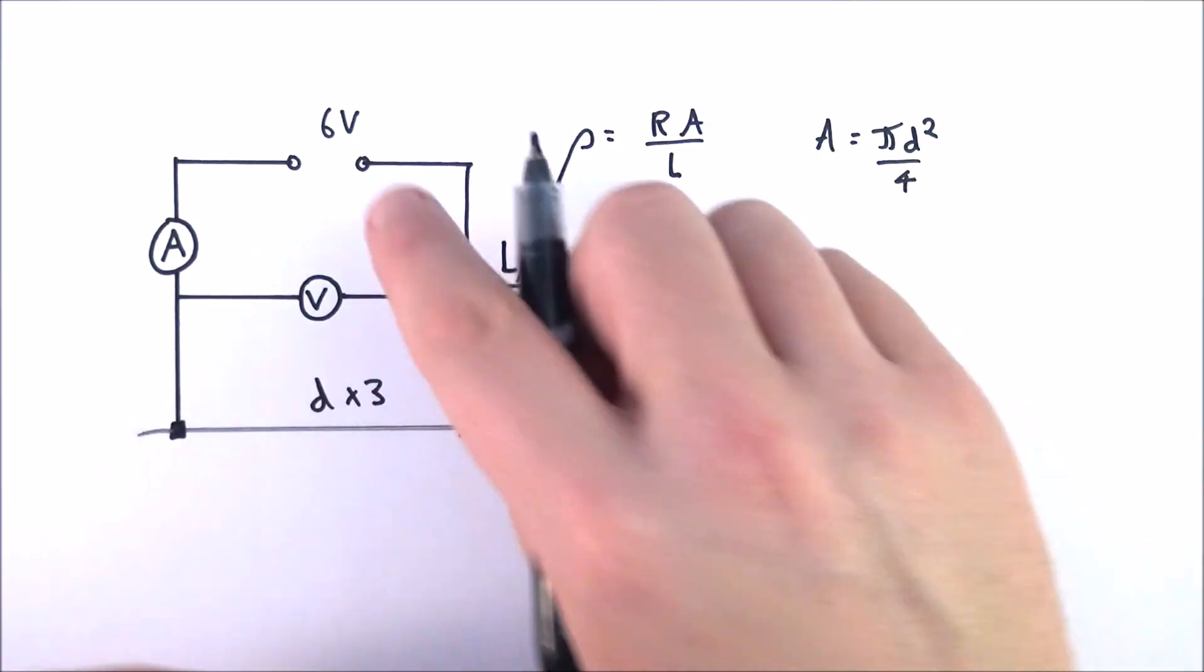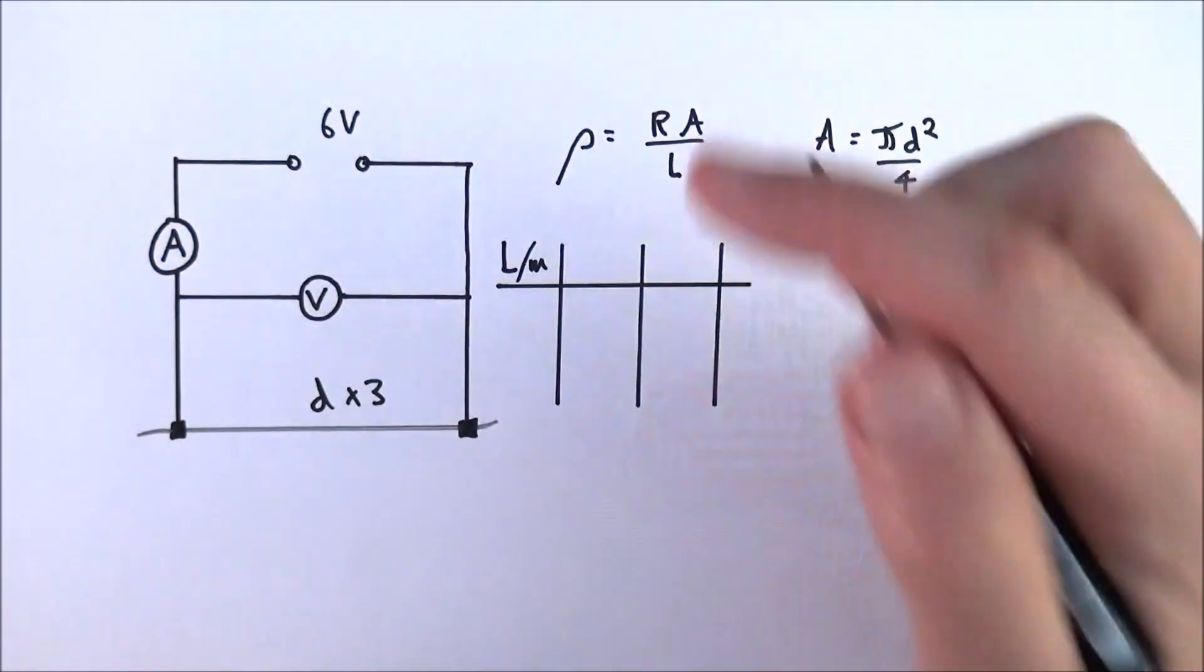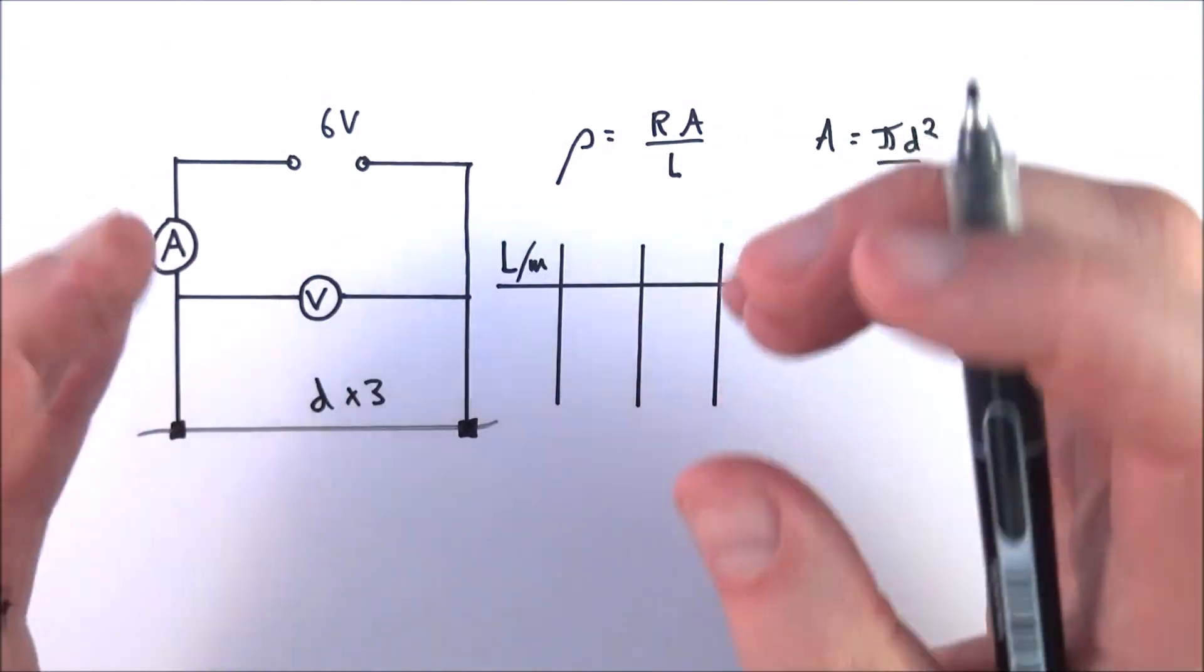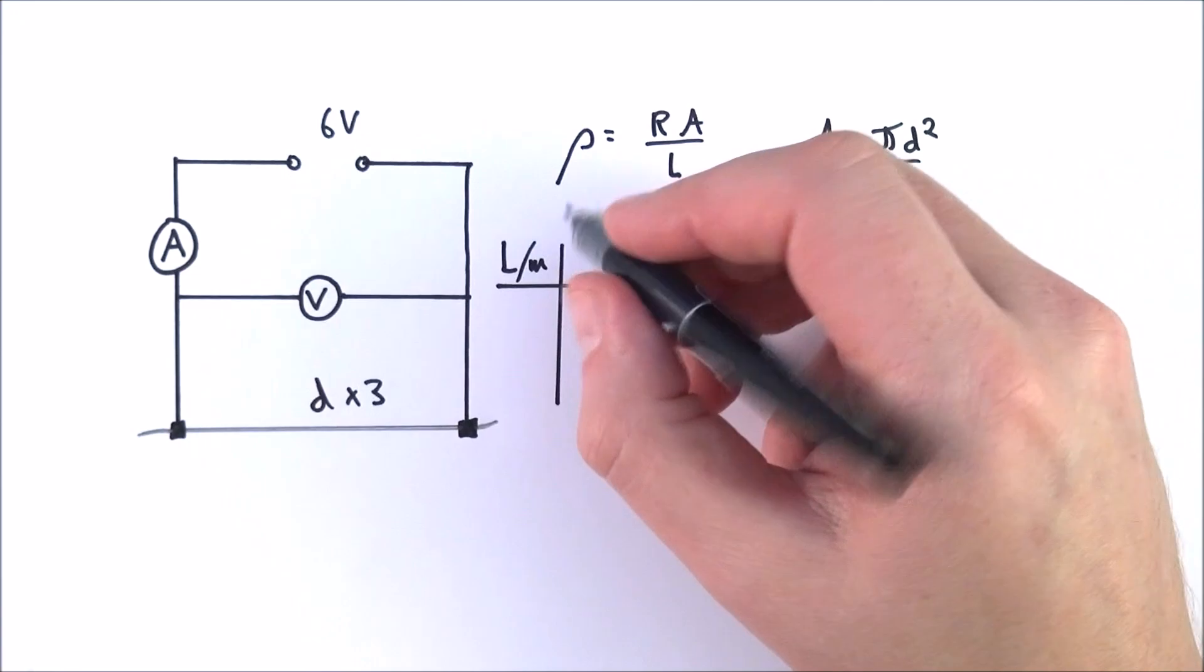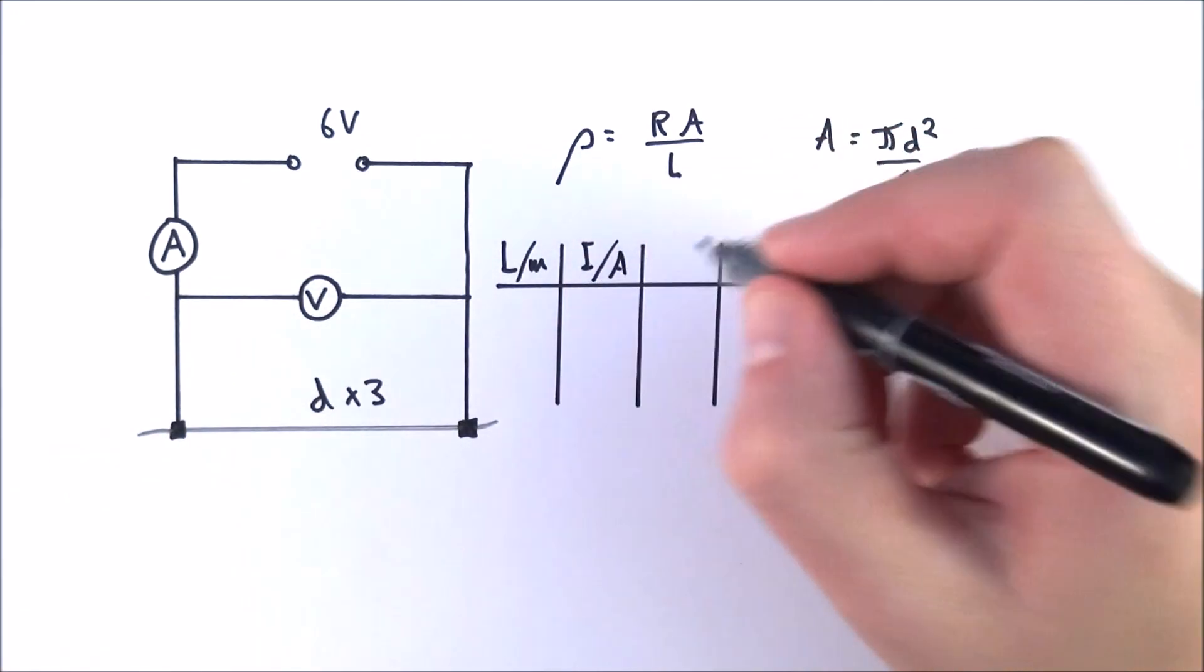What you need to do is adjust the power supply so you have approximately the same kind of current flowing through the wire, nothing massive, maybe about 0.5 of an amp. You're going to be measuring the current going through this in amps and the potential difference across the end of the wire in volts.